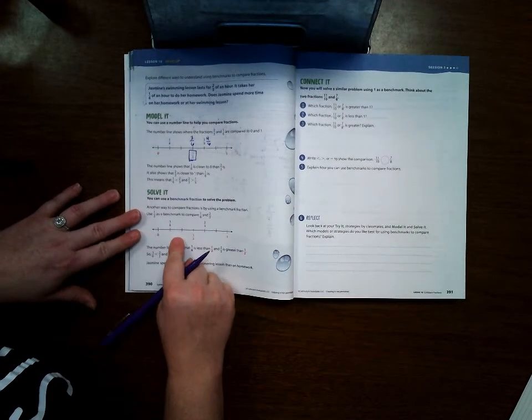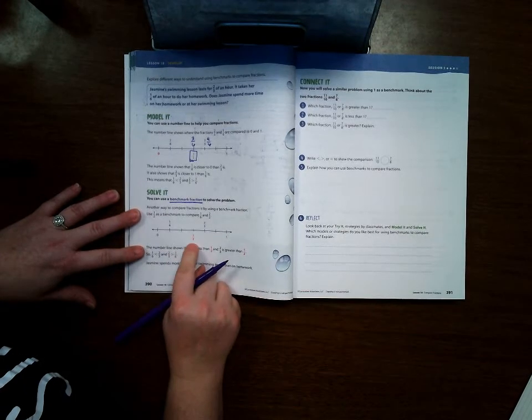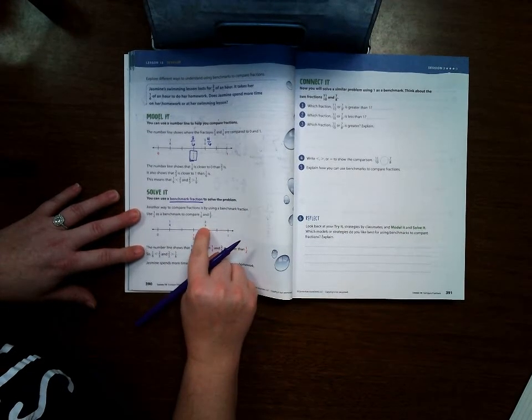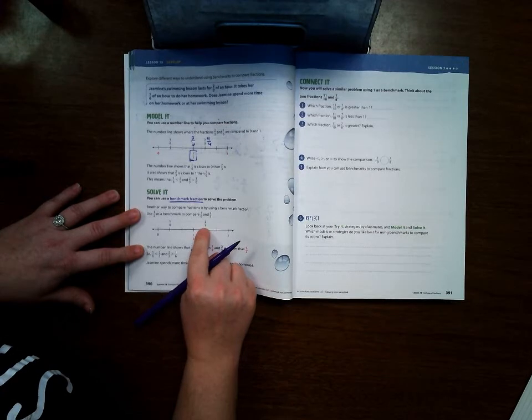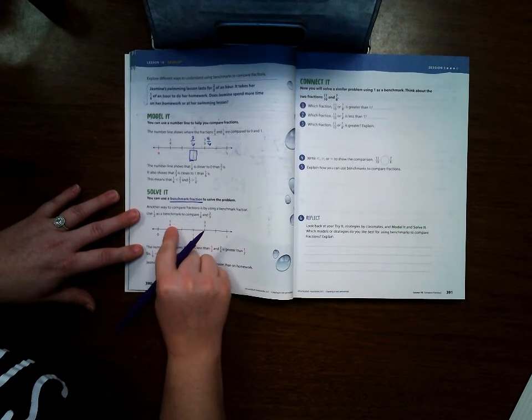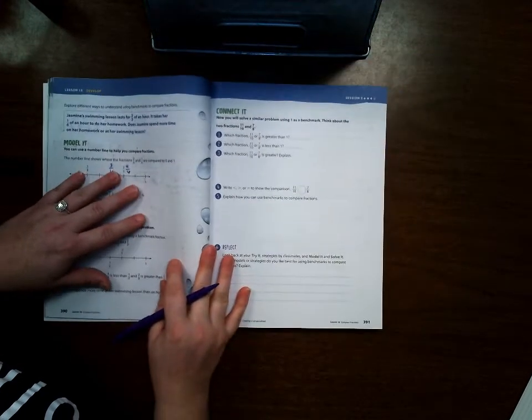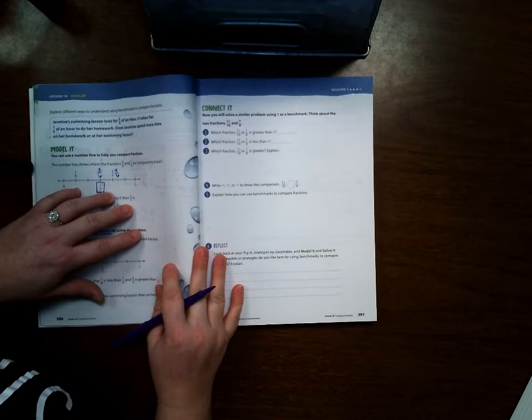Right here on this part, it's again just talking about that benchmark fraction and being able to realize that two-thirds, because half of three would be one and a half. So being able to realize that two is more than half of three, but one is less than half of six. Okay, let's go ahead and take a look at page 191.